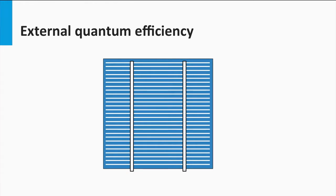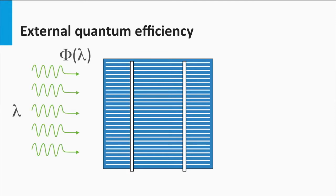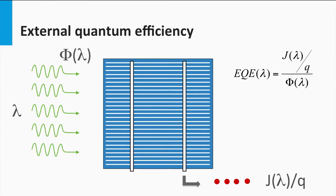For that we introduce the external quantum efficiency. Here we see a solar cell. Let's consider a certain amount of photons at a certain wavelength which are incident on the solar cell. These photons will generate electrons collected at the terminals. The external quantum efficiency is the number of electrons collected at the terminals per incoming photon at a certain wavelength.